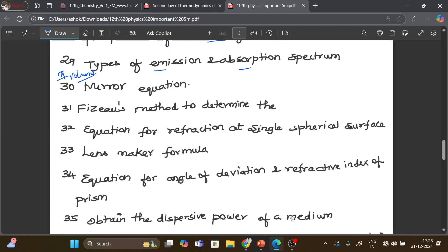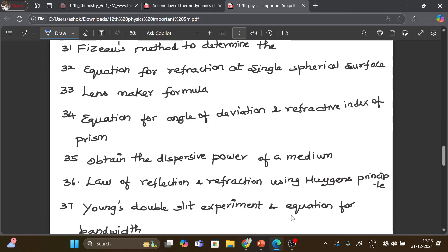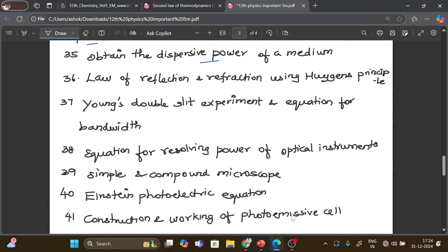The third question, the second volume I will note. Mirror equation. Fizeau's method. Equation for refraction at single spherical surface. Lensmaker formula. Angle of deviation and refractive index of prism. Dispersive power of prism. Law of reflection and refraction using Huygens principle. Then double slit experiment, that is the same question, bandwidth, you can derive the same question.